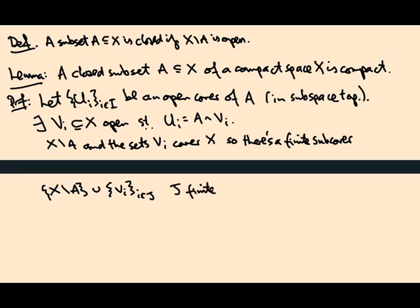And now because that covers the whole of X, if I just take the U_i's with i in J, this covers A. And that's a finite subcover, so A is compact.